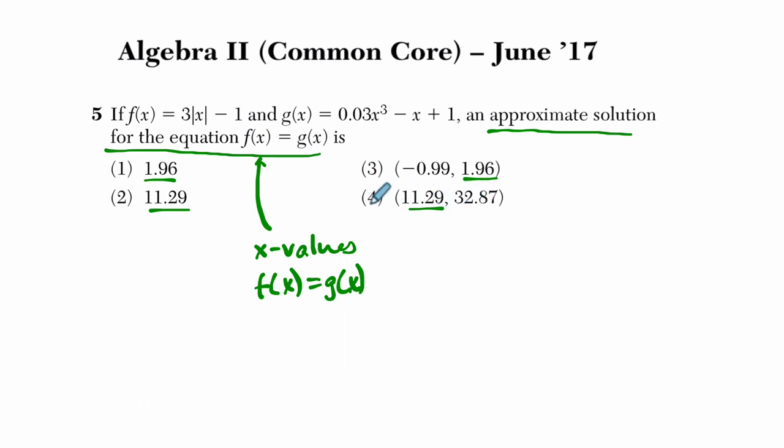So you might be tempted to circle choice four. But this is a point where they intersect, it's the input and output, the value where the outputs are equal. So they want to know just the x value, where they meet, and that's just choice two.